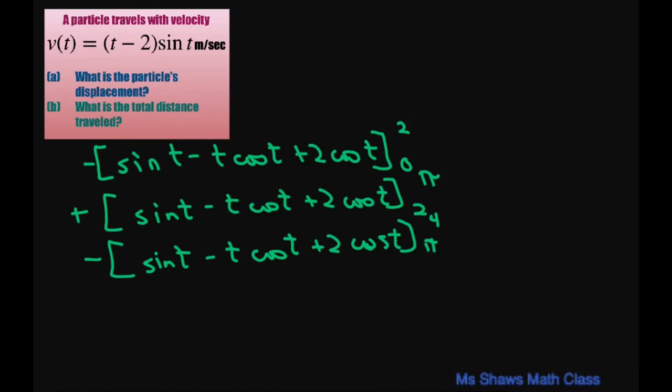This is going to give you, when you evaluate with the 2, you're going to get, end up getting 2 pi plus 2 cosine of 4 minus 2 sine of 2 minus sine of 4 minus 2. So this is going to be approximately 1.914 meters.